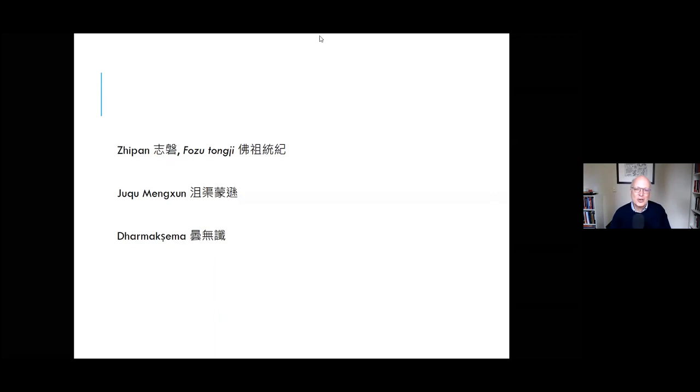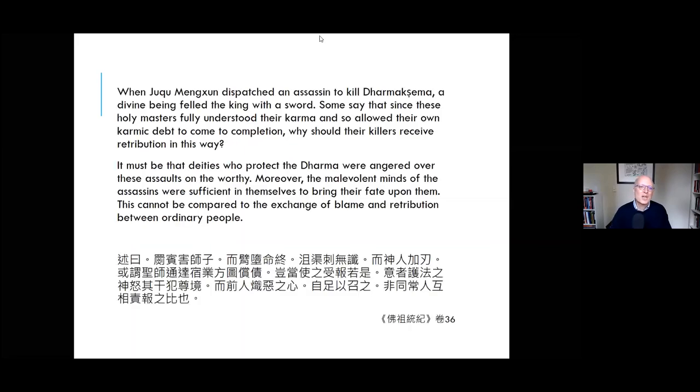But the interesting twist of the story comes after the assassination. After Dharmakshema's murder, Zhujubengxuan, the ruler who had ordered his death, is suddenly filled with regret. And in the middle of the night, the ruler has a vision of a divine being wielding a sword. As soon as he sees this ferocious being with a sword, the ruler promptly falls dead. Now this raises a question for Zhipan. If Dharmakshema himself saw that he was going to die for his own karmic reasons, why should Zhujubengxuan suffer for being the agent of this inevitable death?